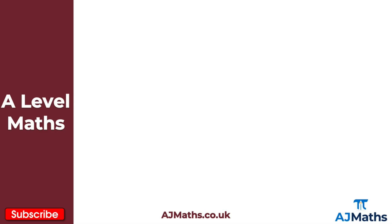In this video, I want to take a look at solving binomial problems. So let's say we've got something like (2 + 10x) to the power of 8, and I want to know the coefficient of x to the power of 7 in this expansion. Normally I'd use the binomial expansion and identify the coefficient of x^7 once we've cleaned everything up, but this would still be quite a lengthy process — it's quicker than doing it by hand, but still time consuming. So what we want to identify is a general term that will quickly give us the coefficient of a term in an expansion like this.